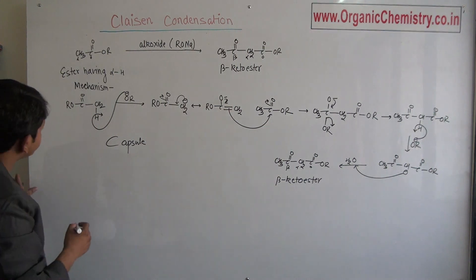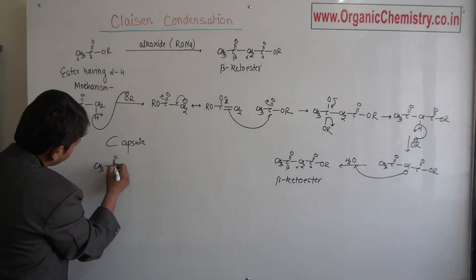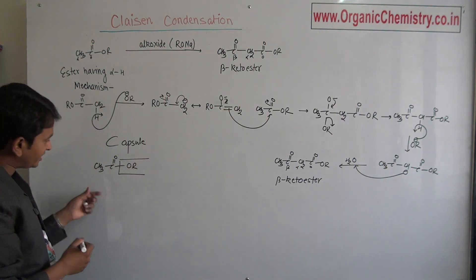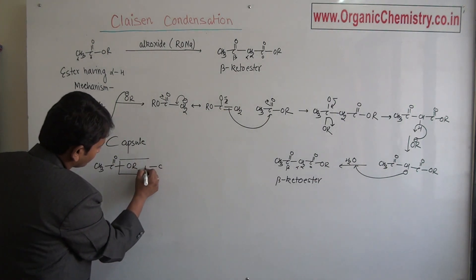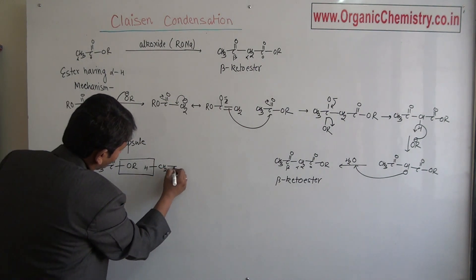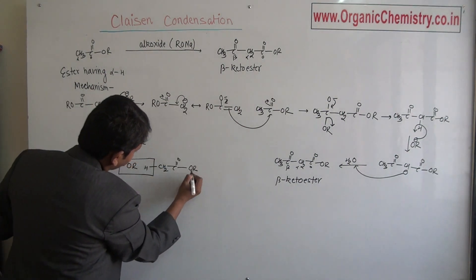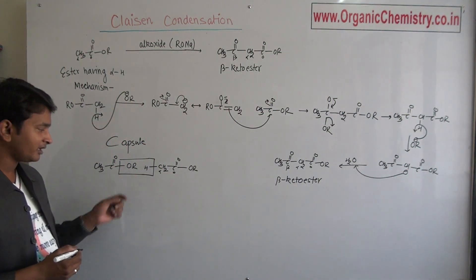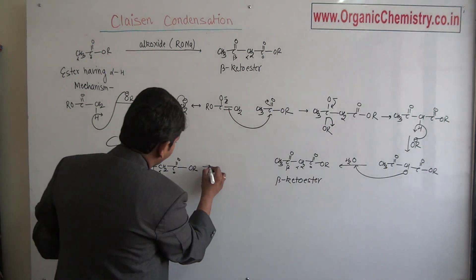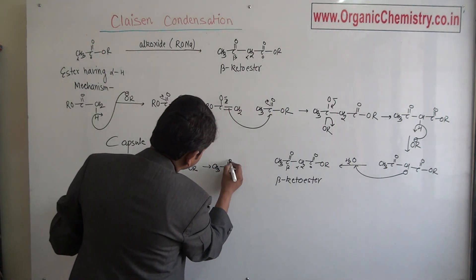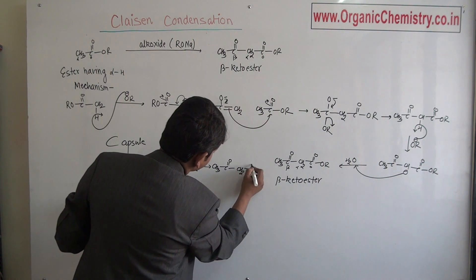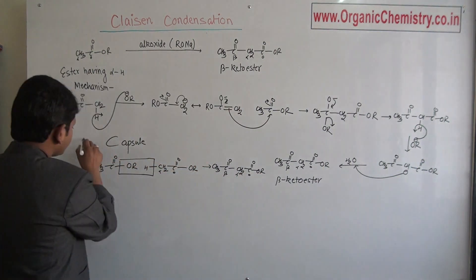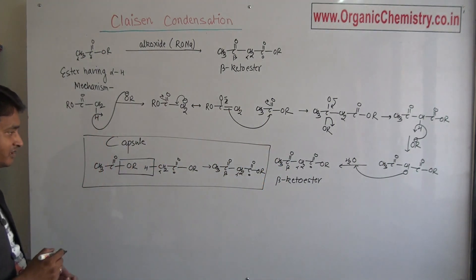Capsule of Claisen condensation is OR of one ester and alpha-hydrogen from another ester—zero and this is alpha. Alpha-hydrogen from another ester and final product will be zero, alpha and beta, that is beta-ketone ester.